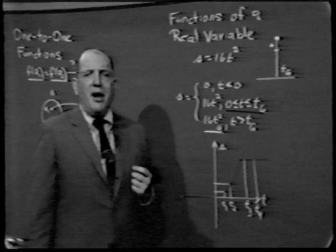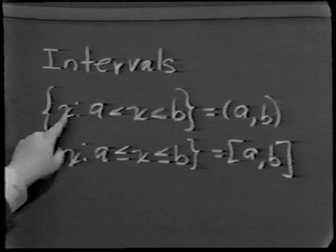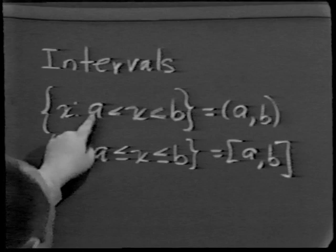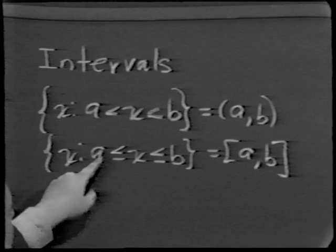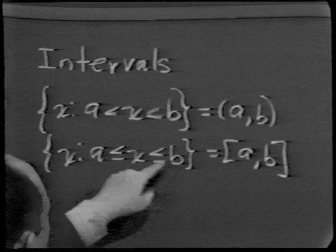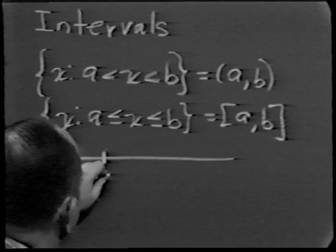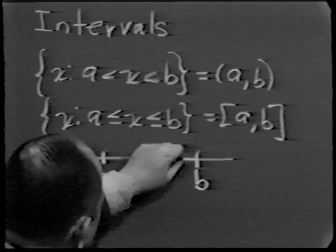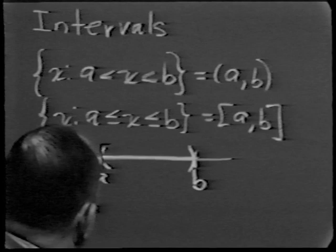A very special type of domain used for functions of a real variable is an interval. If a < b, the open interval from a to b is the set of all x with a < x < b, written with parentheses. The closed interval from a to b is the set of all x with a ≤ x ≤ b, written with brackets. Pictorially they look the same, but in the closed interval the endpoints a and b are included, and in the open interval they are excluded.